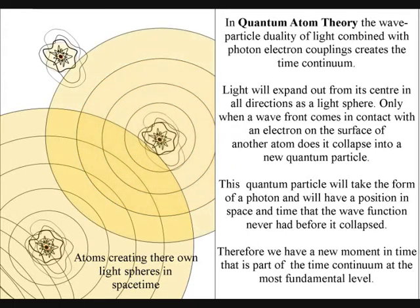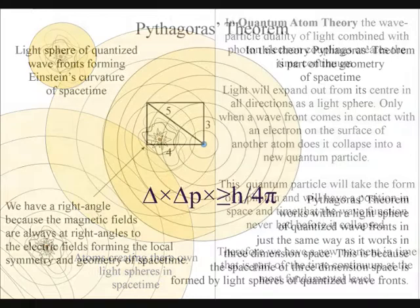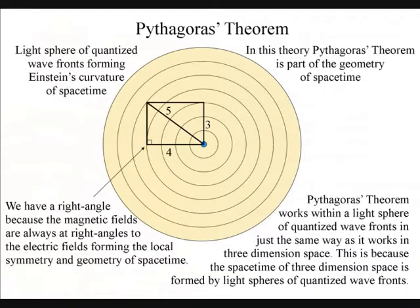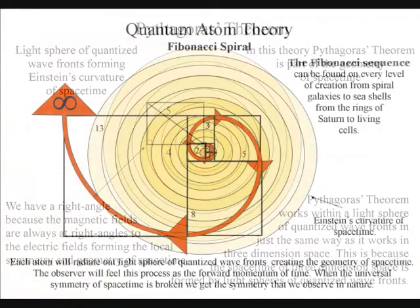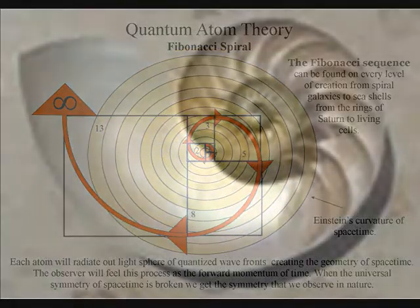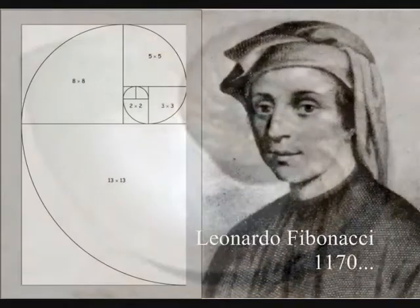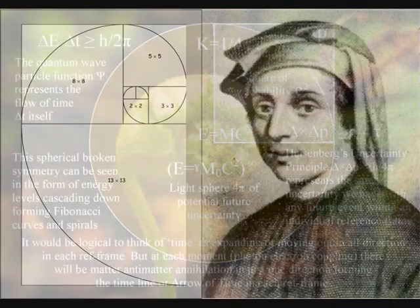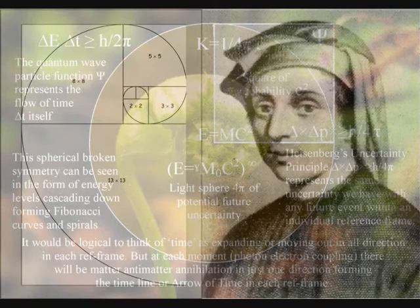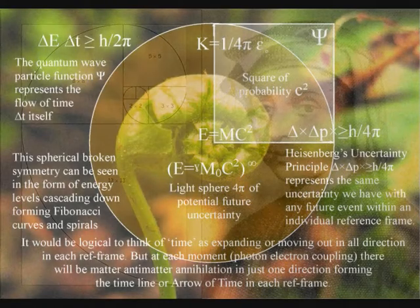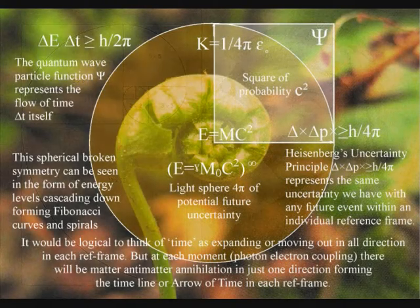This spherical geometry can be seen as 4π in the equations of quantum mechanics. When this symmetry is broken, it forms spiral symmetry, forming the Fibonacci ratio that we see almost everywhere in nature. This is not because of economy of growth, but because it represents a universal dynamic geometry.